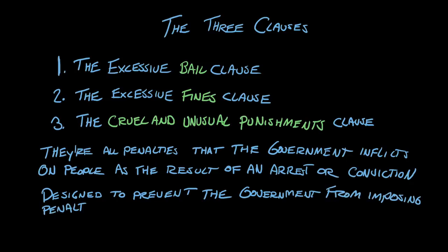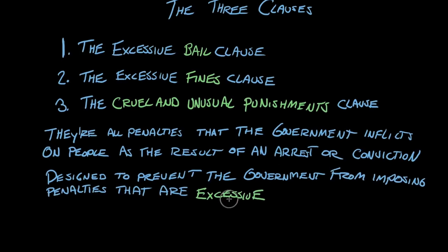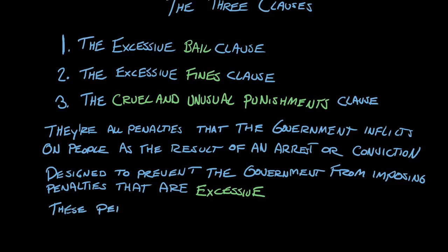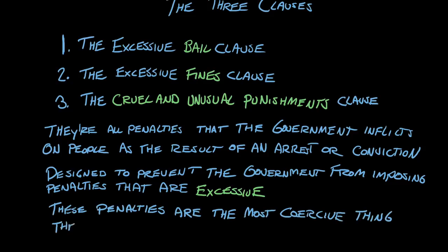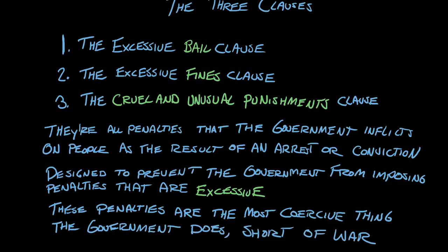And so the Eighth Amendment is designed to prevent the government from doing things that are excessive. When the government punishes a person, that's the most coercive thing the government does short of war. Picking you up and throwing you in a jail cell is about as bad as it gets. And so the framers wanted to make sure that we had a constitutional protection when it comes to criminal punishment.